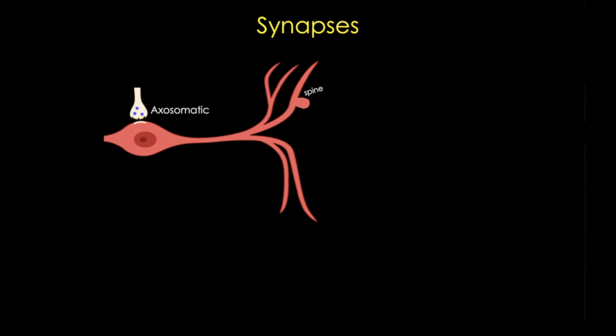Less commonly we have the target of the cell body or even the axon, but more commonly we have axodendritic synapses, so synapses that either target the spine or the dendrite itself.